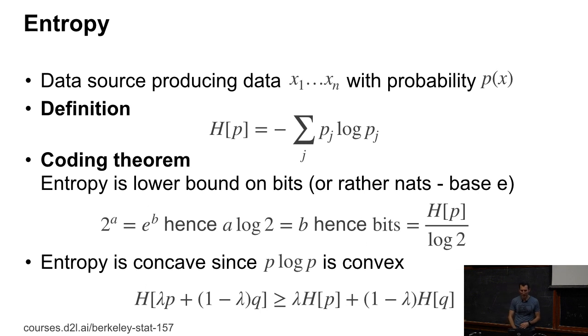Remember, the entropy is given by the negative log of pj, the expectation of that. It's a measure for the number of bits or the amount of information - the number of symbols that I need in order to store and transmit that data. The Shannon Limit Coding Theorem tells us that the lower bound on the number of bits is the entropy of the distribution divided by log base 2. Furthermore, the entropy is concave since p log p is convex. What that means is that the entropy of the mixture of two distributions is always greater than or equal to the mixture of the entropies. In other words, if I take two data sources and mix them up, then the uncertainty can only increase relative to what I would have gotten if I hadn't mixed it up, which is kind of what you would expect.